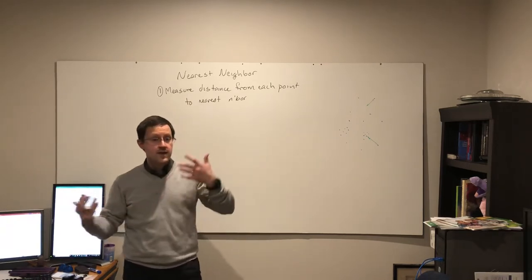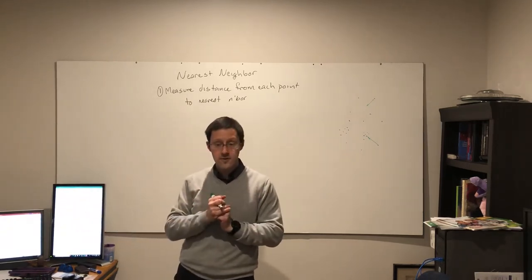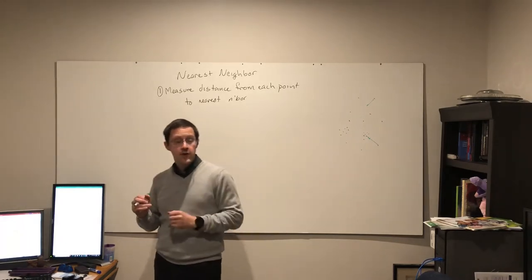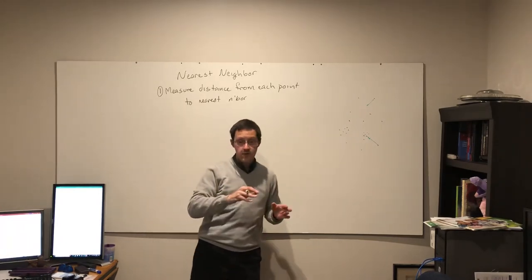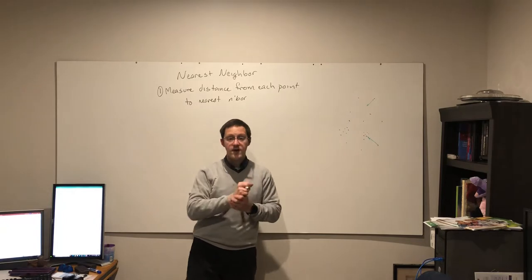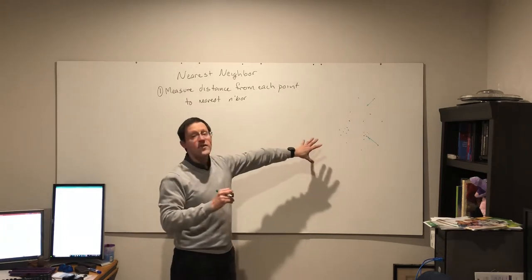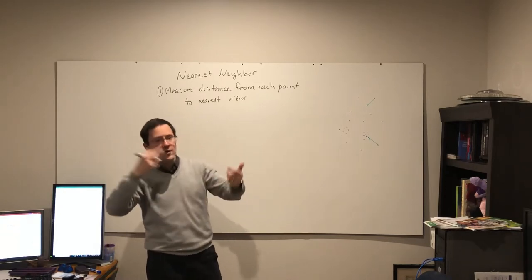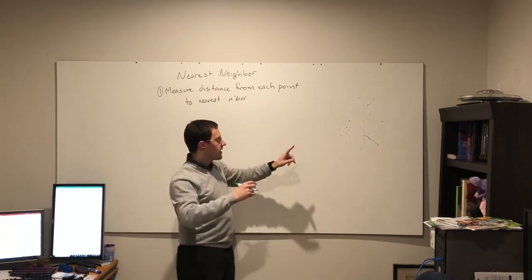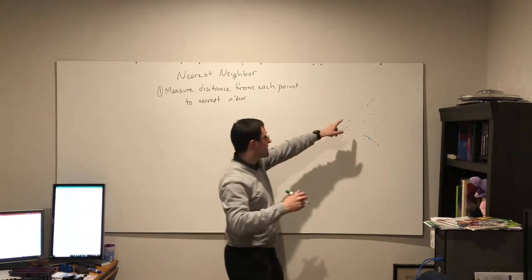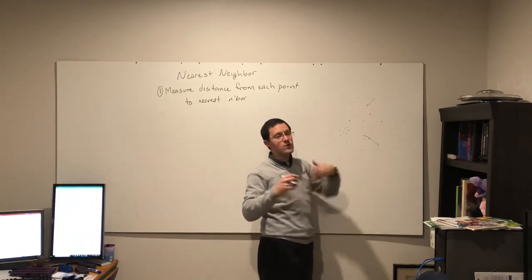As with the k-nearest neighbor distance matrix that we saw when looking at spatial autocorrelation and the concept of neighborhoods, again before spring break, this is not symmetric. Just because you're my nearest neighbor doesn't guarantee the other way around. Each distance, each arrowhead is included once.